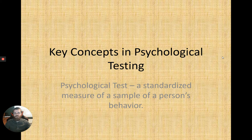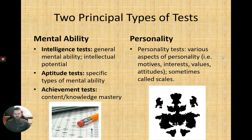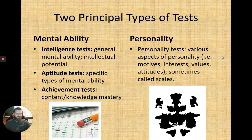Moving to the next topic: key concepts in psychological testing. There are two principal types of tests — mental ability tests and personality tests. Within mental ability tests, you have intelligence tests for general mental abilities and intellectual potential, aptitude tests for specific abilities like the ACT or SAT, and achievement tests for content knowledge and mastery, like a unit test.